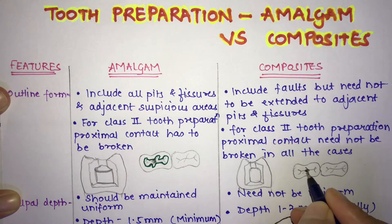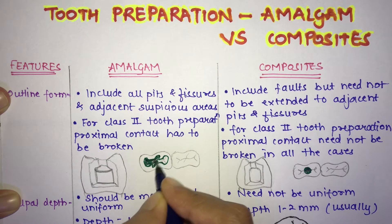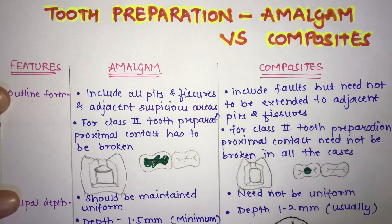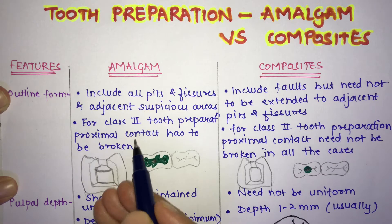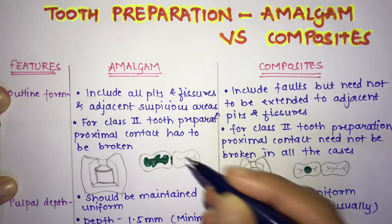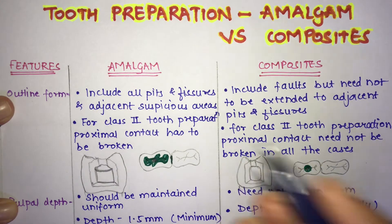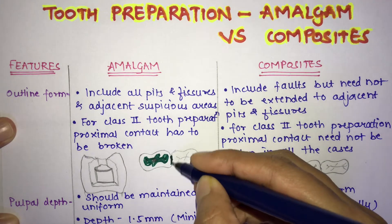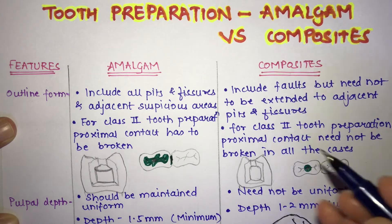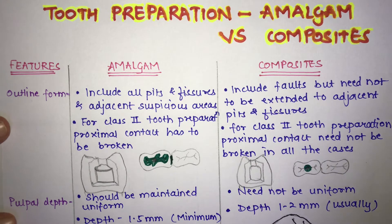In composite, you just remove the caries and do the restoration over that area. The preparation is comparatively extensive in amalgam. For a class 2 tooth preparation in amalgam, the proximal contact has to be broken — that is the tooth contact between two teeth. In composites, for class 2 preparation, the proximal contact need not be broken in all cases.